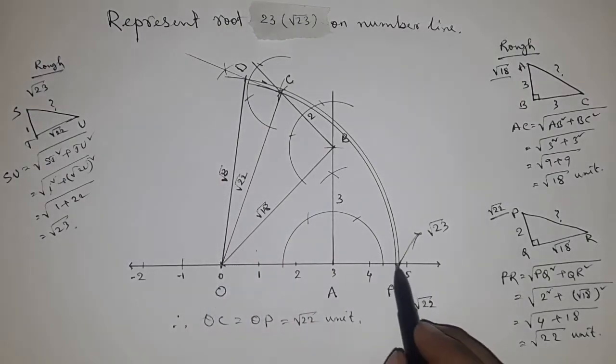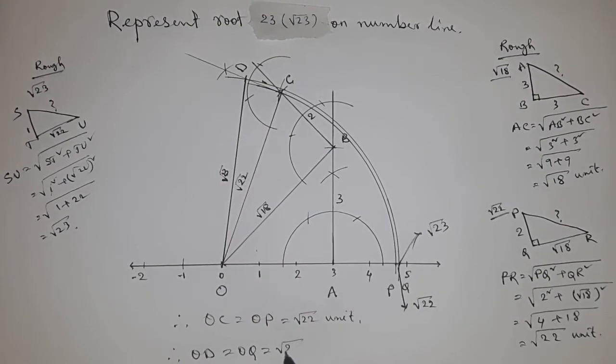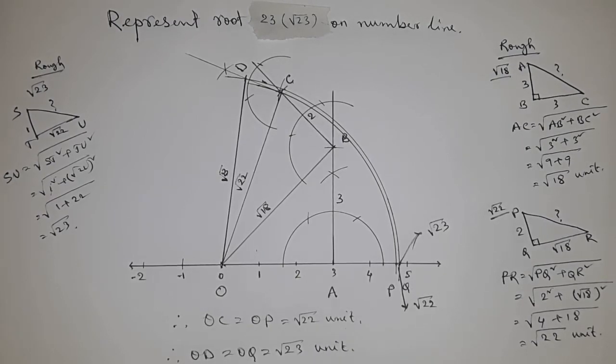Therefore, distance OD and OQ are equal to root 23 units. That's all. Thanks for watching, please subscribe, like, and comment on my video.